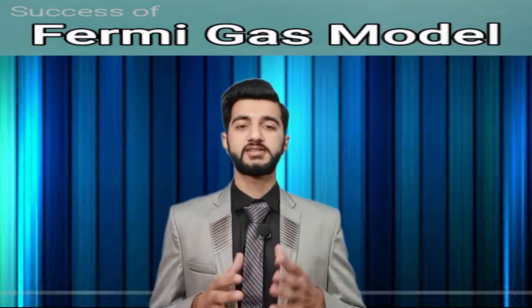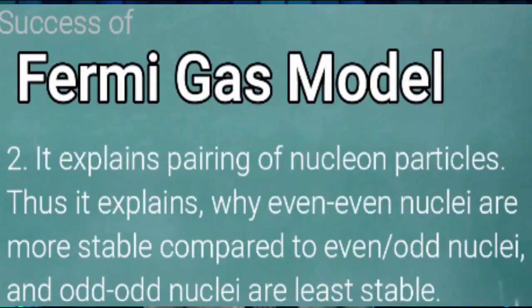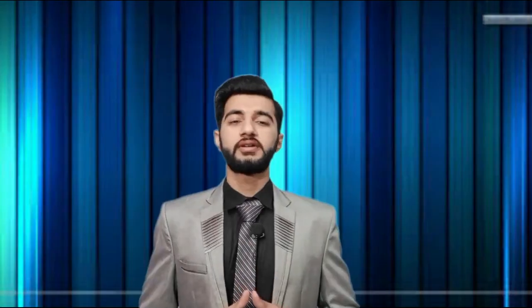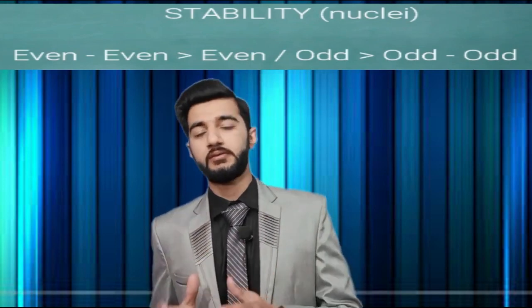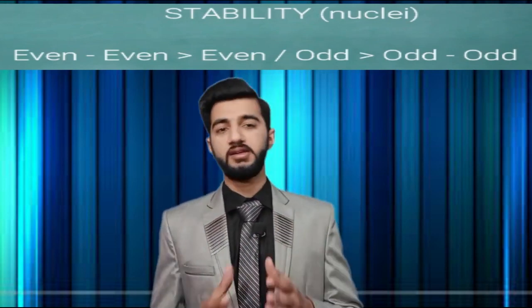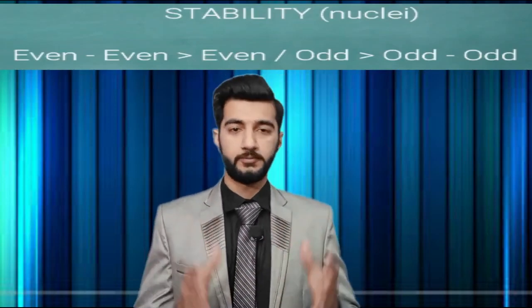Let's talk about the successes of the Fermi gas model. Since it assumes particles are bound in a potential well, particles can only exist in discrete or quantized energy levels. It also explains the pairing of protons and neutrons inside the nucleus, and shows that even-even pairing is much more stable than even-odd pairing, which in turn is more stable than odd-odd pairing.